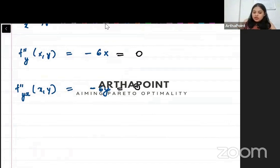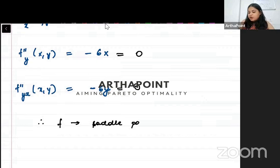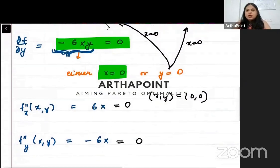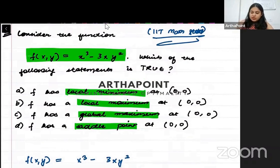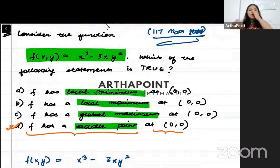Therefore, we know that the only thing possible is that this is a saddle point. At (0, 0) we have obtained a saddle point - neither maxima nor minima. So the answer to this question is D: f has a saddle point at (0, 0).